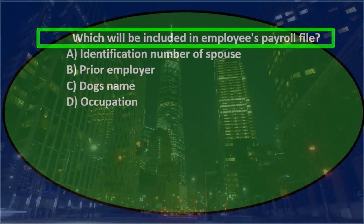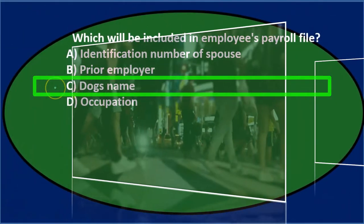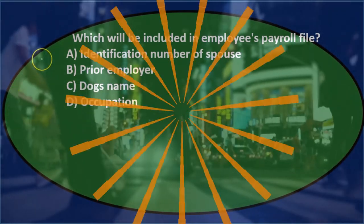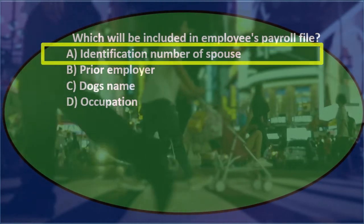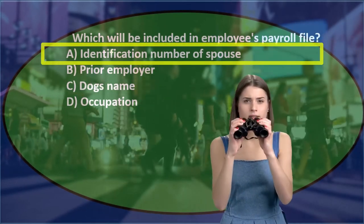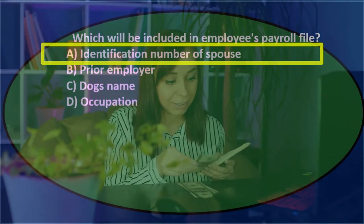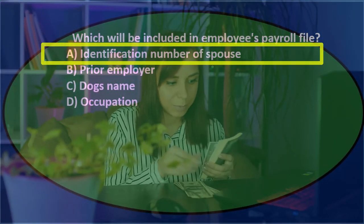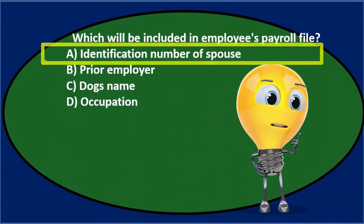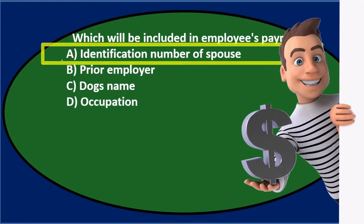Next question: Which will be included in the employee's payroll file? A. Identification number of spouse, B. Prior employer, C. Dog's name, or D. Occupation. The identification number of a spouse probably doesn't belong — we want the employee's identification. We do need to know marital status for withholdings, but not the spouse's identification number — that's more personal information than necessary for a payroll file.